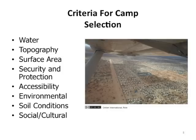Criteria for selection of settlement areas include water availability, topography, surface area, security and protection, accessibility, environmental factors, soil conditions, and social-cultural factors.